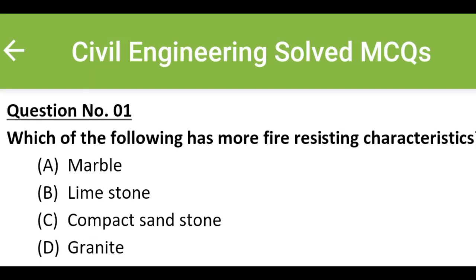Hello friends, welcome to Civil Engineering Exam. Today we are going to see MCQs related with building materials. Which of the following has more fire resisting characteristics? Option A: marble, Option B: limestone, Option C: compact sandstone, Option D: granite. The correct answer is Option C: compact sandstone.